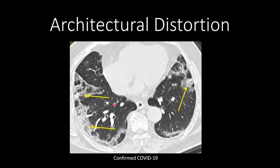This is another case of severe COVID pneumonia. We start to see more architectural distortion — the lung almost looks tethered or being pulled. We start to see more linear opacities in addition to the areas of consolidation and ground glass opacification.